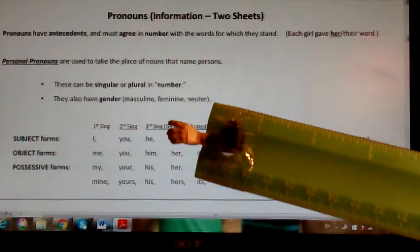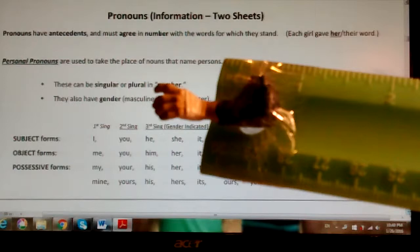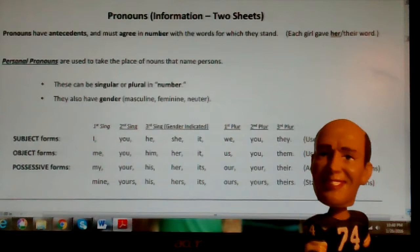Moving down through this, here's the information, two sheets worth. You can see if we look right here that we have subject forms like I and you and he and she, those are all singular, it, and then the plural ones: we, you, and they.